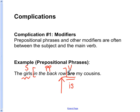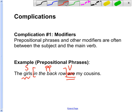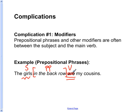So if we thought row was the singular subject of the sentence, we would be tempted to use the singular verb form, which is is. We could be tempted to read the sentence like this: The girls in the back row is my cousins — which is of course incorrect. It's incorrect because the subject of this sentence is girls, and because the subject is plural, we have to choose the plural verb form, which is are. The sentence is correct as it reads: The girls in the back row are my cousins.